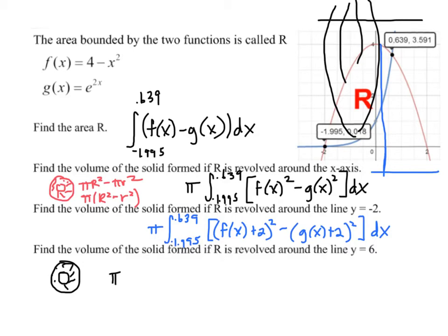So, we would still be doing pi multiplied by our two radius squared. But, to get the radius, we would do 6 minus the functions. And, the reason it's 6 minus the function is because 6 tells us how far off the axis we are. And, a function tells me how far off the axis I am. Well, I want to know the difference between 6 and the function's height. So, I do 6 minus.